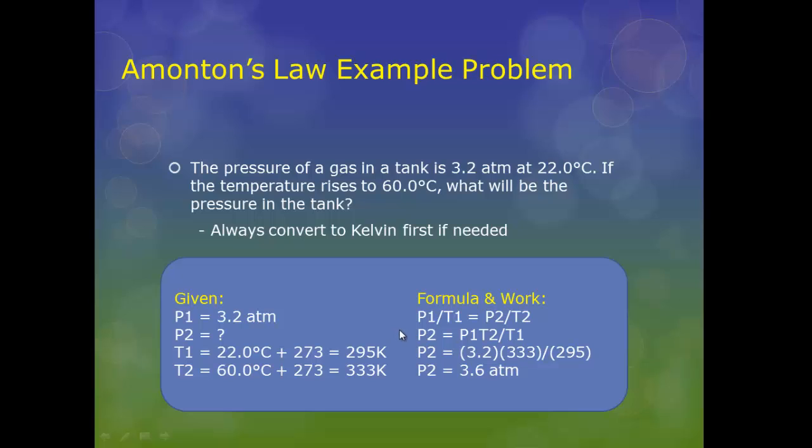So, we dump in those variables into P1, T1, equals P2, and T2. That means this variable here is by itself, the P2. So, we have to get P2 by itself. And in doing so, we end up with this equation here, and we come up with this answer down here.